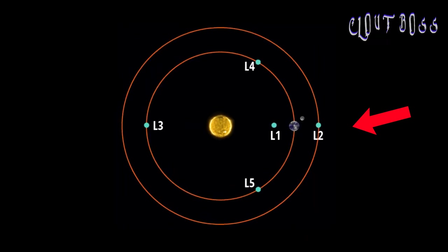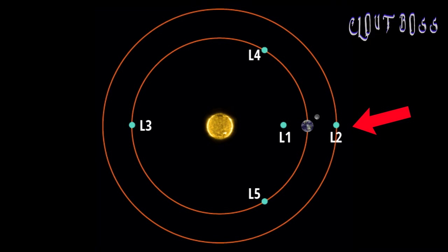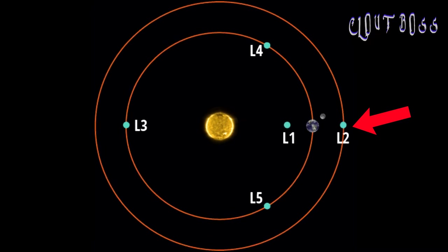This L2 point also means that the JWST will keep up with the Earth as it orbits the sun. There are several Lagrange points. L2 has been chosen because it has the Earth, Moon, and Sun behind it, which makes it the perfect dark sky to observe from.